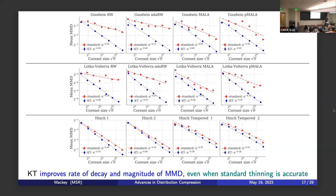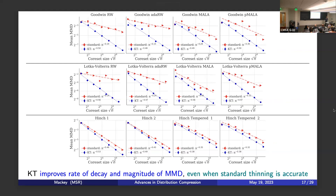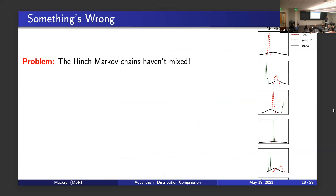Something is wrong with the Hinch picture that isn't visible from the convergence plots. The Hinch chains actually haven't mixed. Running two independent Markov chains to 4 million points each and plotting marginal distributions over single parameters — which should overlap if both represent the same distribution — shows them to be basically non-overlapping for a number of marginals. This means the two chains are exploring different local modes and haven't mixed to the target.